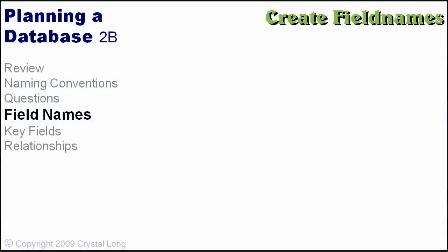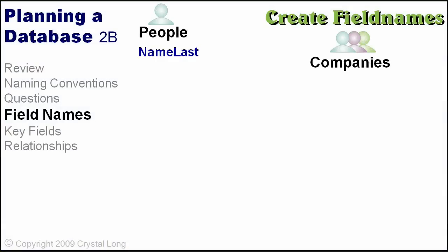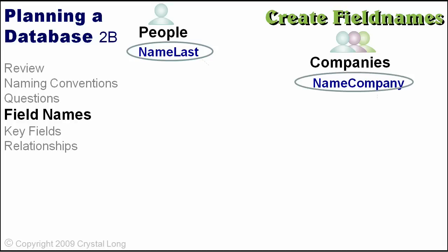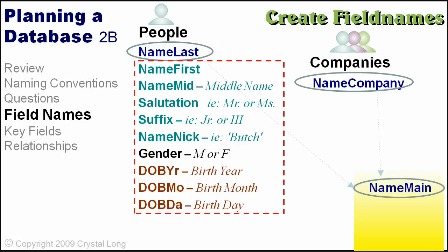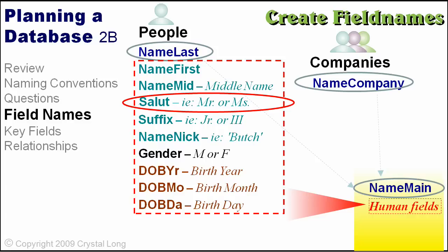The people table is the heart of this database, so let's think carefully about how we set it up. We touched on storing humans and companies together — you can look up a human by their last name and a company by the company name, so let's create a field called name_main. Humans can also have a first name, middle name, salutation, suffix, and nickname, as well as gender and date of birth, which companies don't have. The salutation field will be short — something like Mr. or Ms. — so we'll shorten the field name to salute. Humans and companies both have a category and notes.